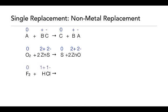In our final single replacement example, fluorine reacts with hydrogen chloride. Fluorine is a non-metal and chlorine is a non-metal. Chlorine ends up by itself as Cl₂ — it must have that subscript of 2 because that's how it naturally occurs as a diatomic molecule. We then form the compound hydrogen fluoride, HF, with a subscript of 1 since hydrogen is 1+ and fluorine is 1−. We balance the equation to have equal numbers of each atom on both sides. Chlorine started off negative and ended neutral — it was oxidized, losing electrons. Fluorine started at zero and ended at −1 — it gained electrons, so it was reduced.